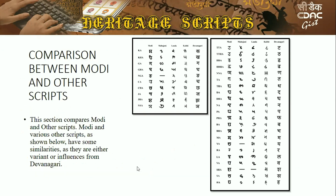We have also provided a comparison between Modi and other heritage scripts — Mahajani, Landa, and Kaithi. All are heritage scripts that the Government of India is now pushing hard to preserve, as these scripts are being lost and very few documents and images are available. Comparing Modi with other heritage scripts or Devanagari, there is notable similarity since they are either variants of or influenced by Devanagari — for example, the letter 'chha' is very similar across scripts, though some letters differ significantly.